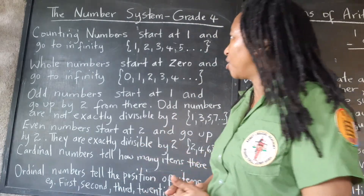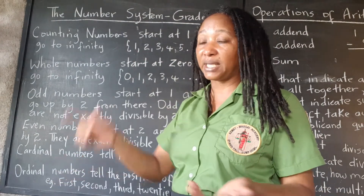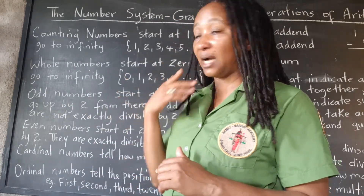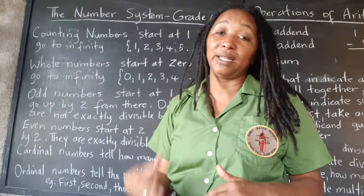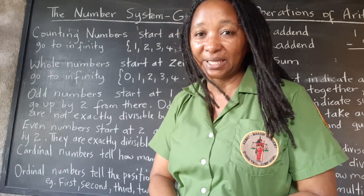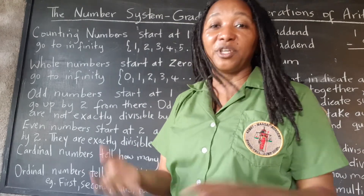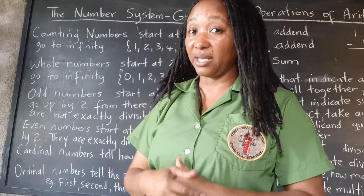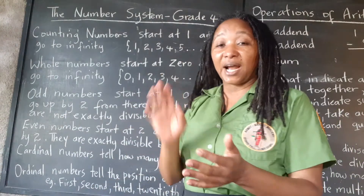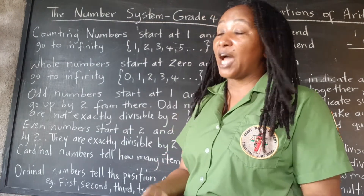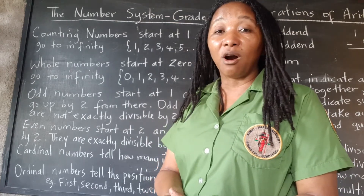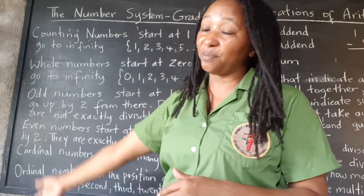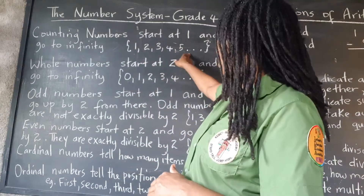Just to recap: counting numbers start at one, because when we're counting we say one first. We don't start counting and say three, and continue. We start at one, and counting numbers go on and on and on. You cannot stop counting. If you start counting as a toddler and keep counting until the day you die, there will always be another number. Somebody else will have to continue counting after you are gone - and somebody after them, and somebody after them. They go to infinity.